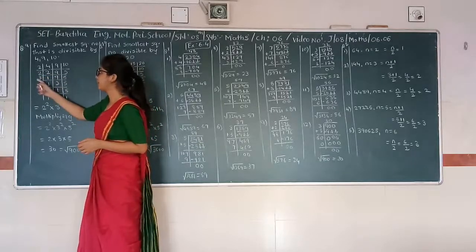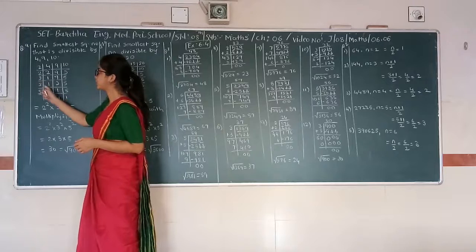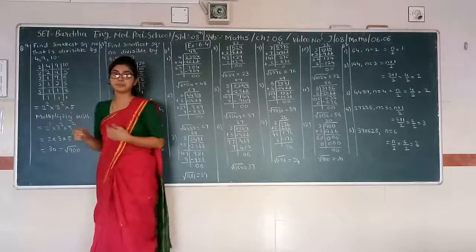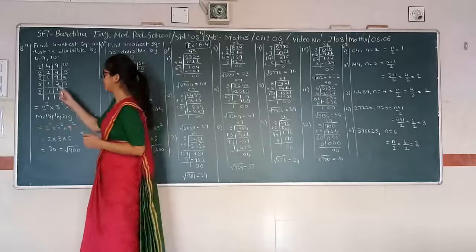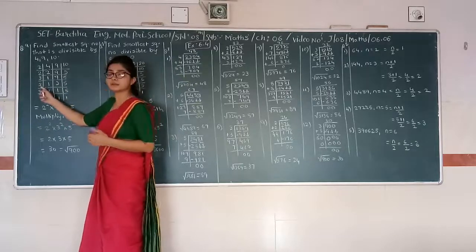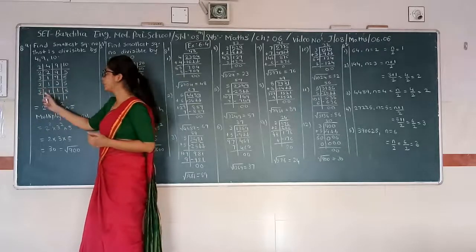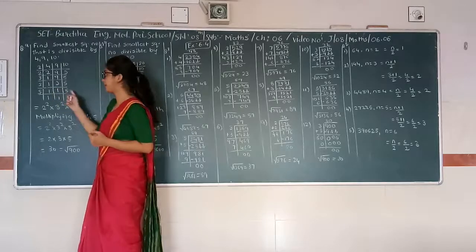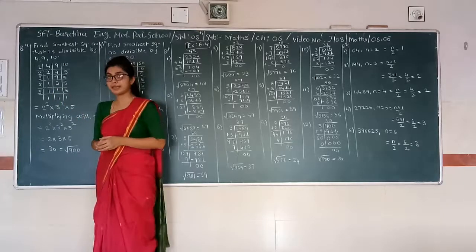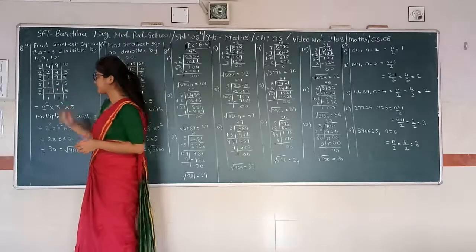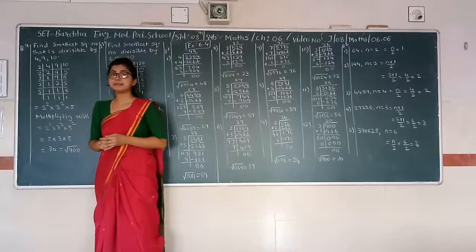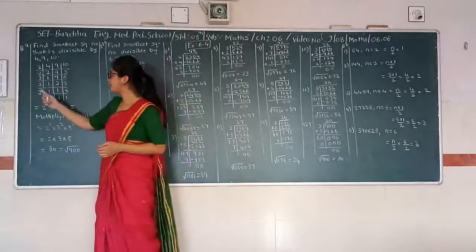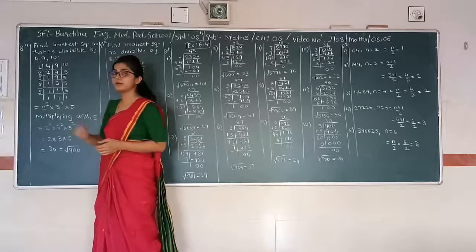9 is divisible by 3. 3 divided by 3 gives 1, and 5 will remain as it is. Now we have to find 5, which is divisible by 5. 5 divided by 5 gives 1 and 1.